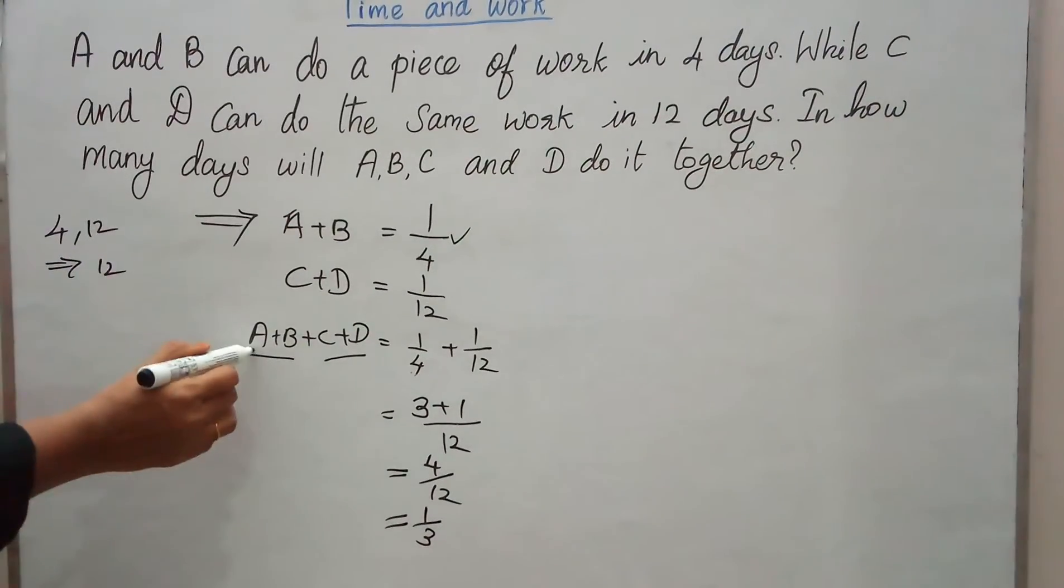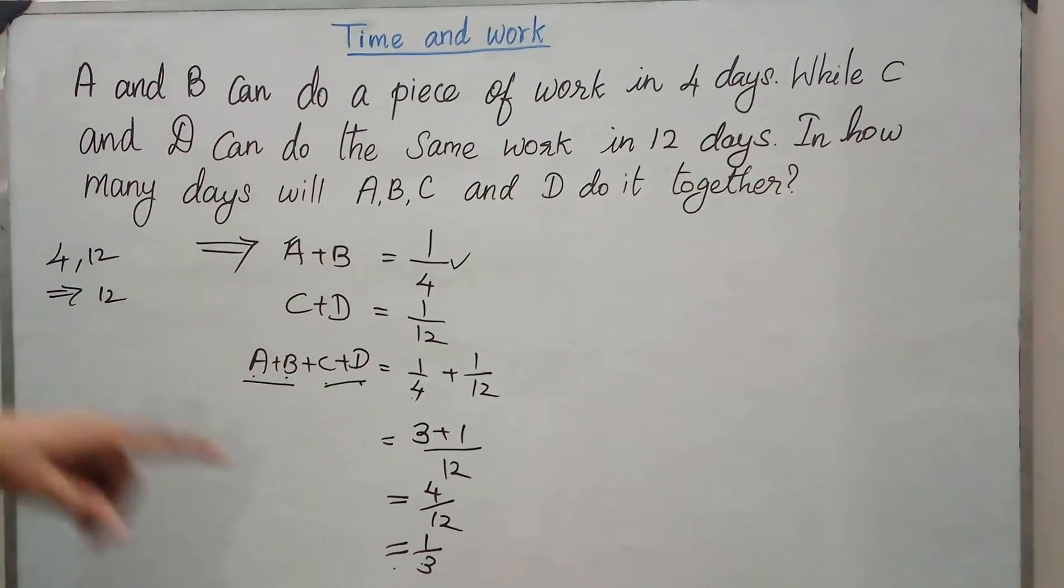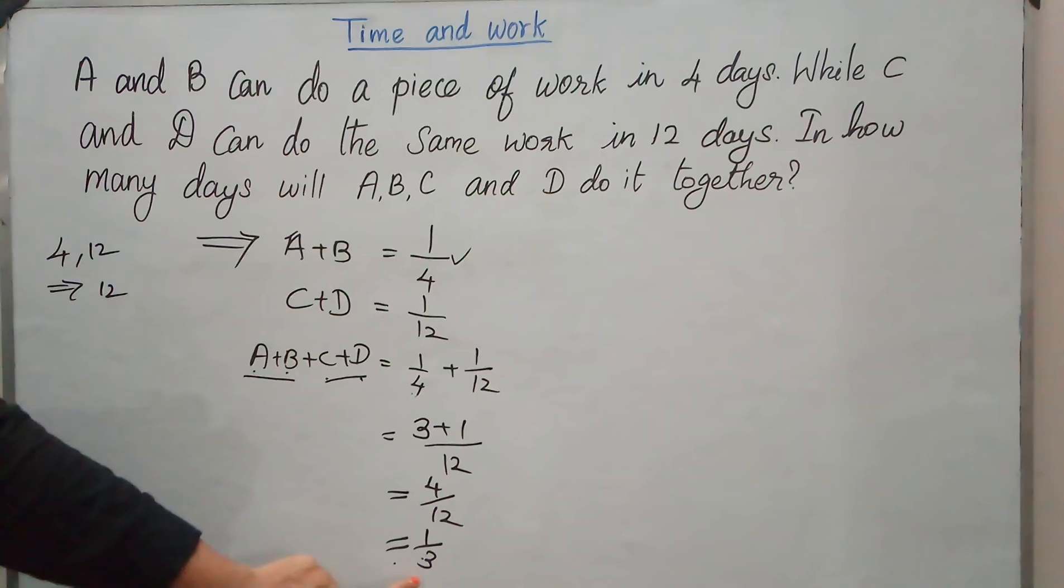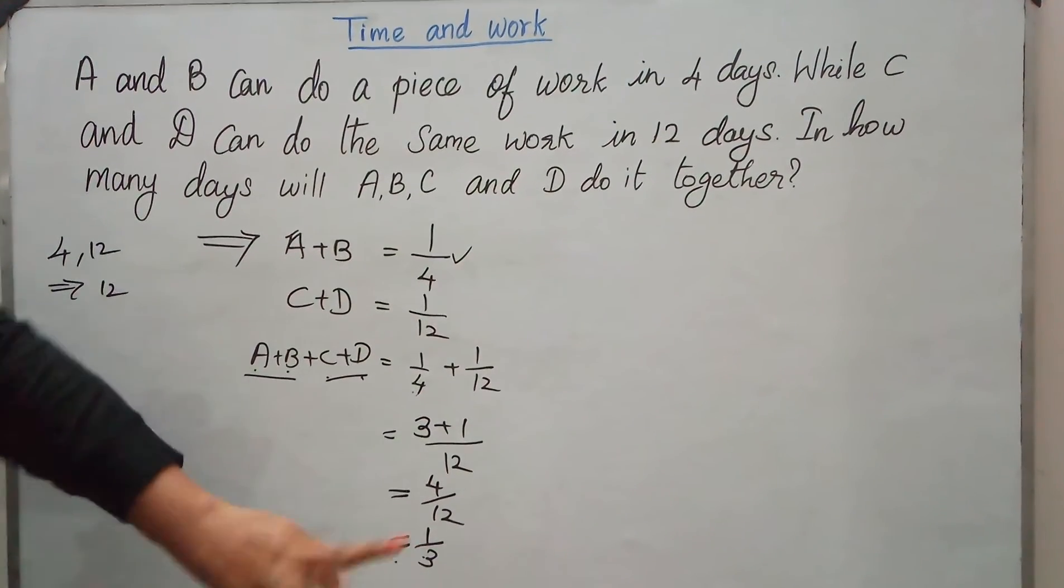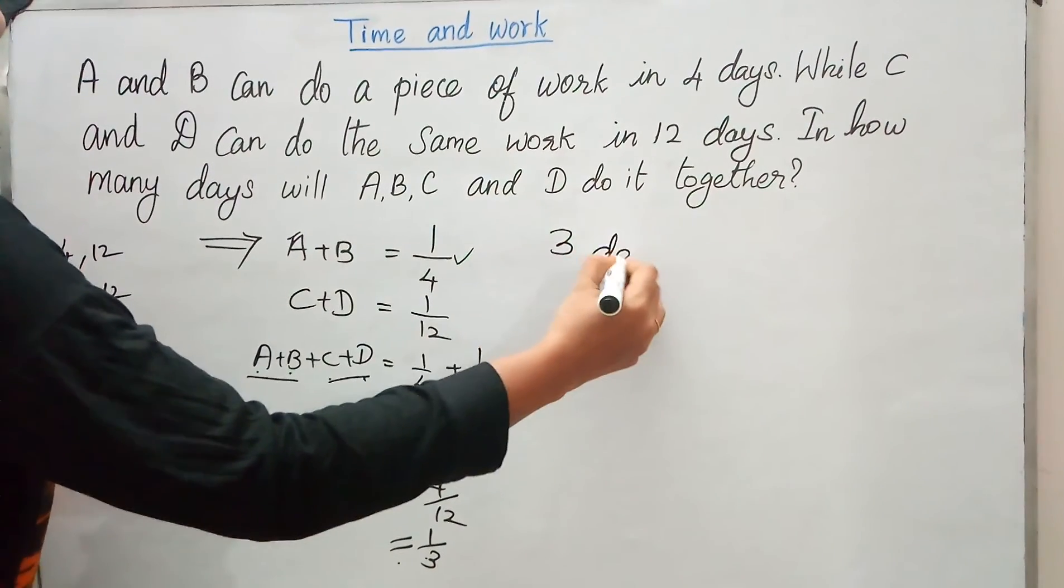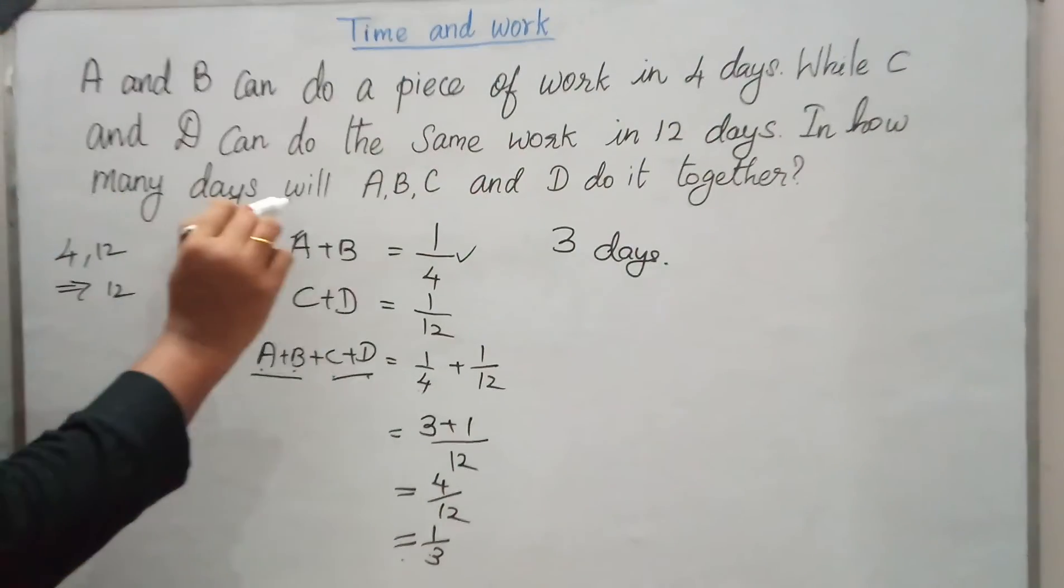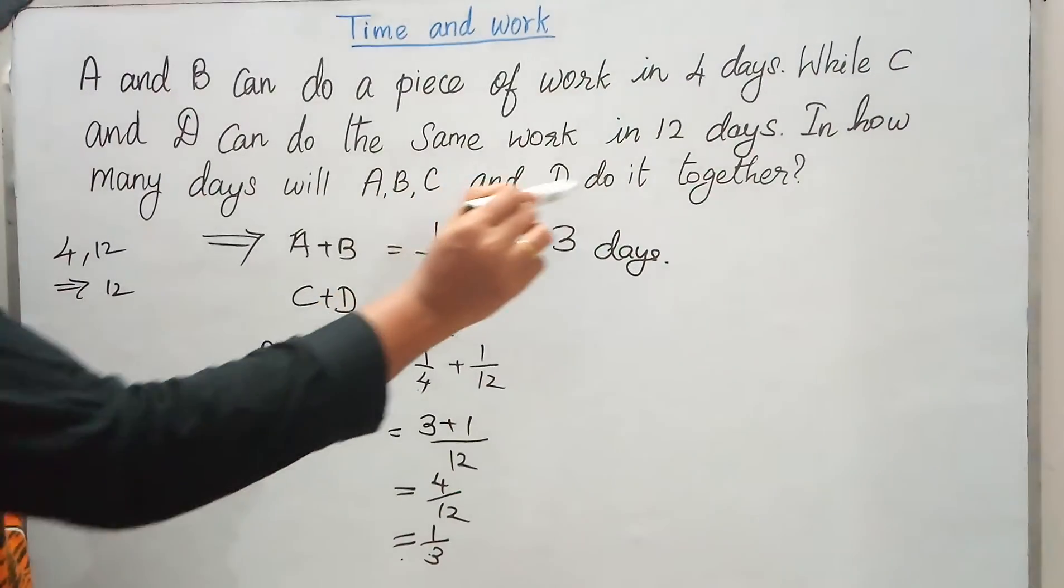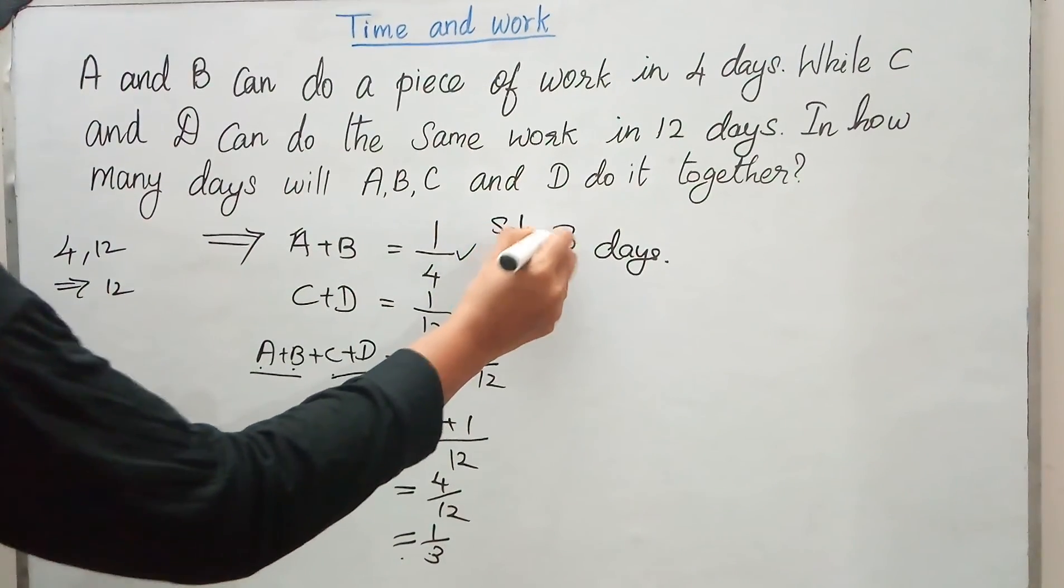So A plus B plus C plus D is 1 by 3. What does this mean? Since this is the amount of work, we have to reciprocal it. So 3 days. 3 days is the answer. How many days will A, B, C, and D do it together? The answer is 3 days.